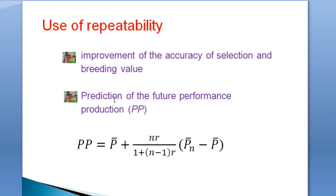A repeatability survey is also used to predict the future performance or production given by PP and is equal to the mean of the performance plus the number of measurement times the repeatability over one plus n minus one times r, times the product of the mean of n measurements minus the mean of the overall performance.